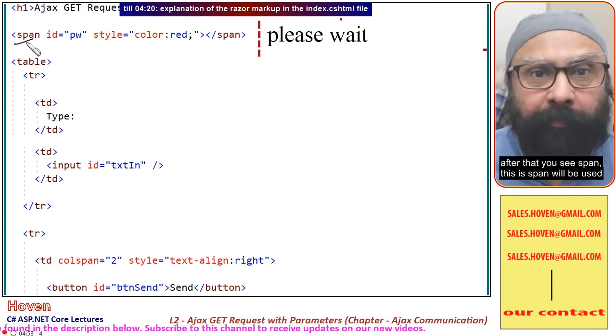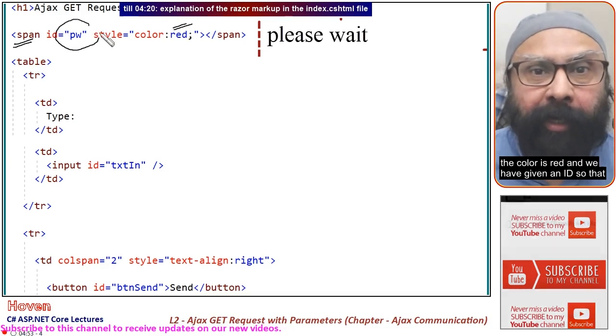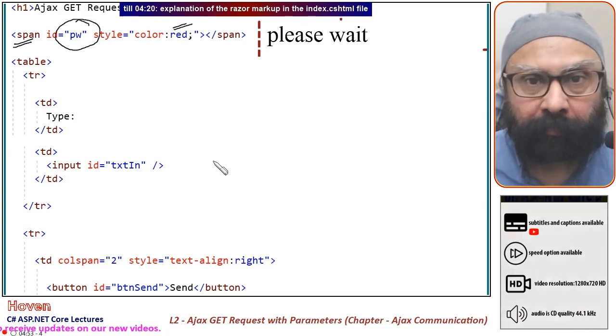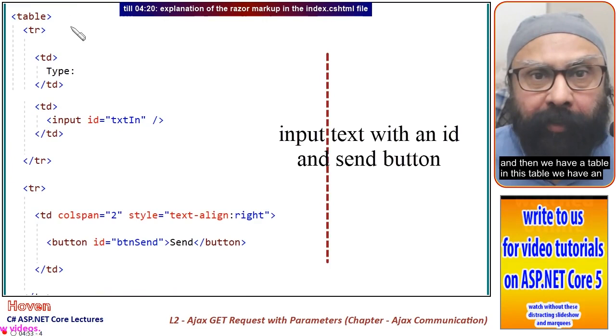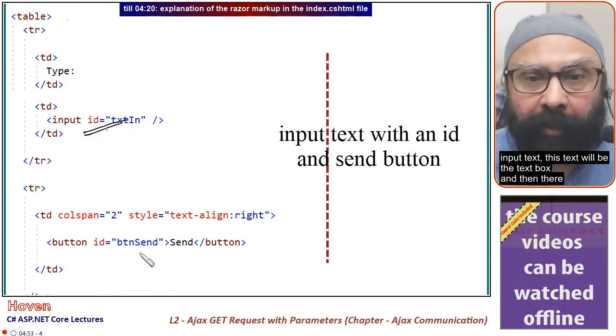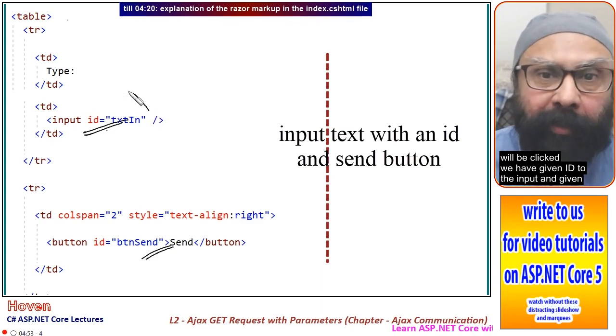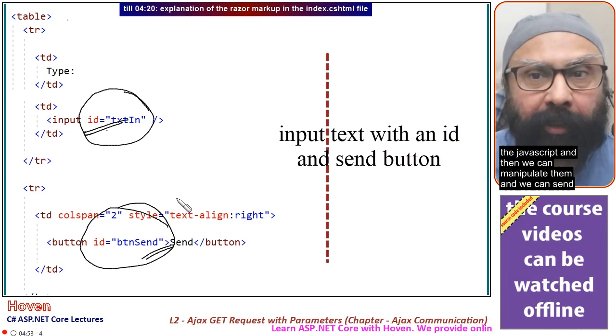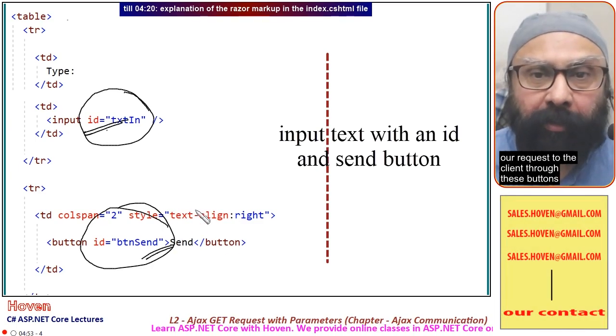After that you see a span. This span will show the please wait message. We've given it an id so we can handle it in JavaScript. Then we have a table with an input text box and a send button. We've given ids to both so we can access and manipulate them in JavaScript.